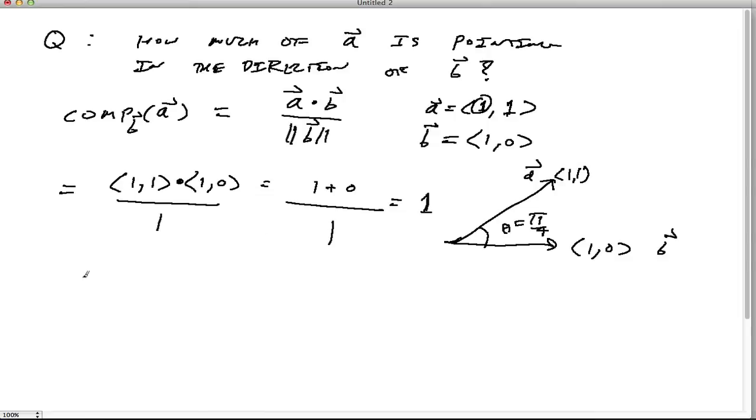Alright. So now let's relate it to the angle again. So 1 is A dot B. We know that's equal to the magnitude of A times the magnitude of B times cosine theta. Well okay, what's the magnitude of A? Well, magnitude of A, you can find out pretty straightforwardly. It's square root of 2. The magnitude of B is 1 times cosine theta.